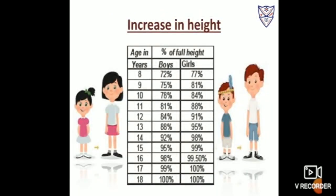The first change is increase in height. From the table, at the age of eight, boys will have reached 72% of their full height, whereas girls will have completed 77% of their height. But at the age of 18, both will reach their maximum height, that is 100%. Initially, girls grow faster than boys, but at the age of 18, both boys and girls reach their maximum height.